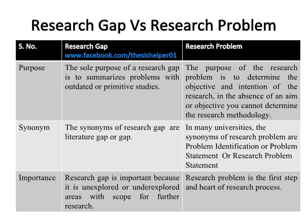Research gap is important because it identifies unexplored or underexplored areas with scope for further research, while research problem is the first step and heart of the research process.